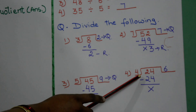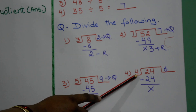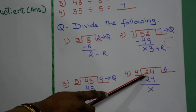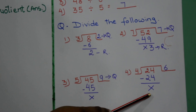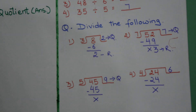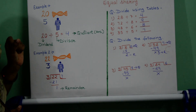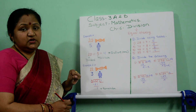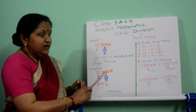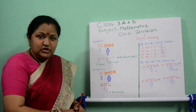Now children, remember this: to do division — and I told you in your Zoom class also — for multiplication you have to learn your tables. So please learn your tables and try to do your sums like this. Thank you.